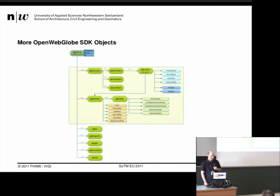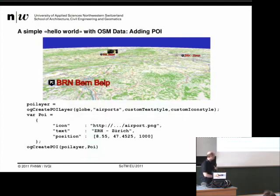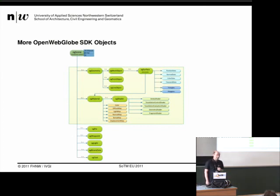Some other objects: there is the POI object, a billboard object where you can add HTML5 content — for example, a movie running in such a billboard object. And of course a text object where you can have multi-language text and translations.